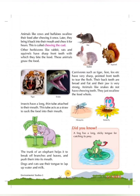Insects have a long thin tube attached to their mouth. This tube acts as a straw to suck the food into their mouth. Just like when you drink juice using a straw, a similar tube is attached to the mouth of mosquitoes and butterflies. With the help of these tubes, they suck the nectar of the flower or the blood of animals. Mosquitoes feed on the blood of animals, and butterflies suck the nectar of flowers. This long thin tube which acts as a straw helps them to suck their food.